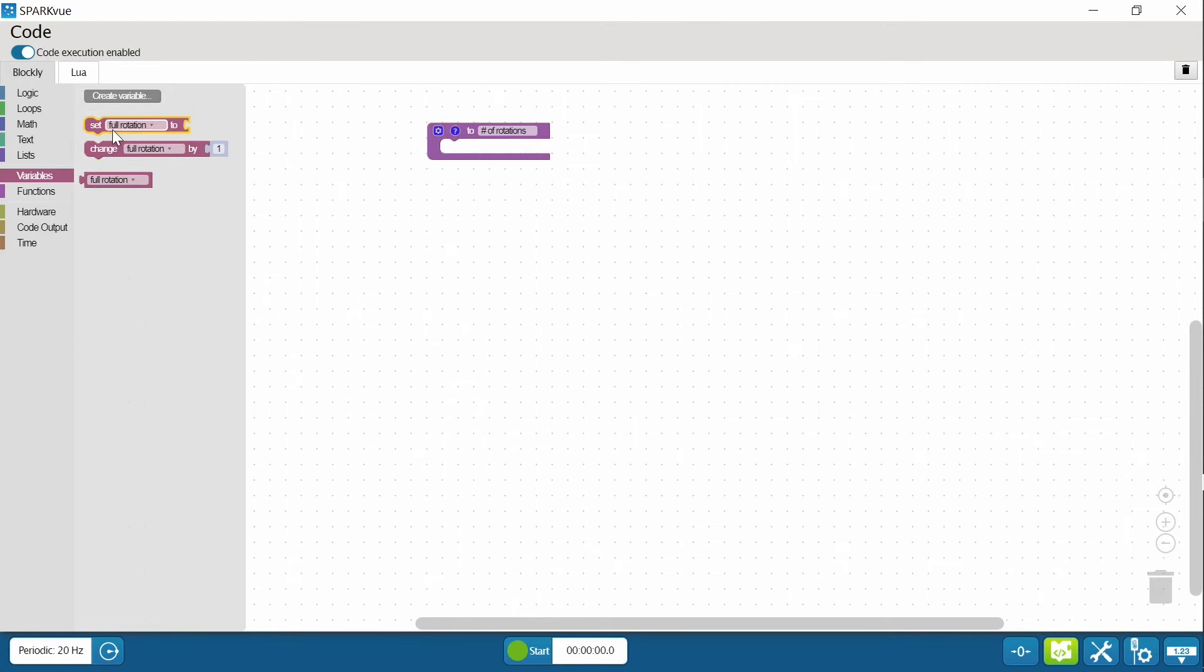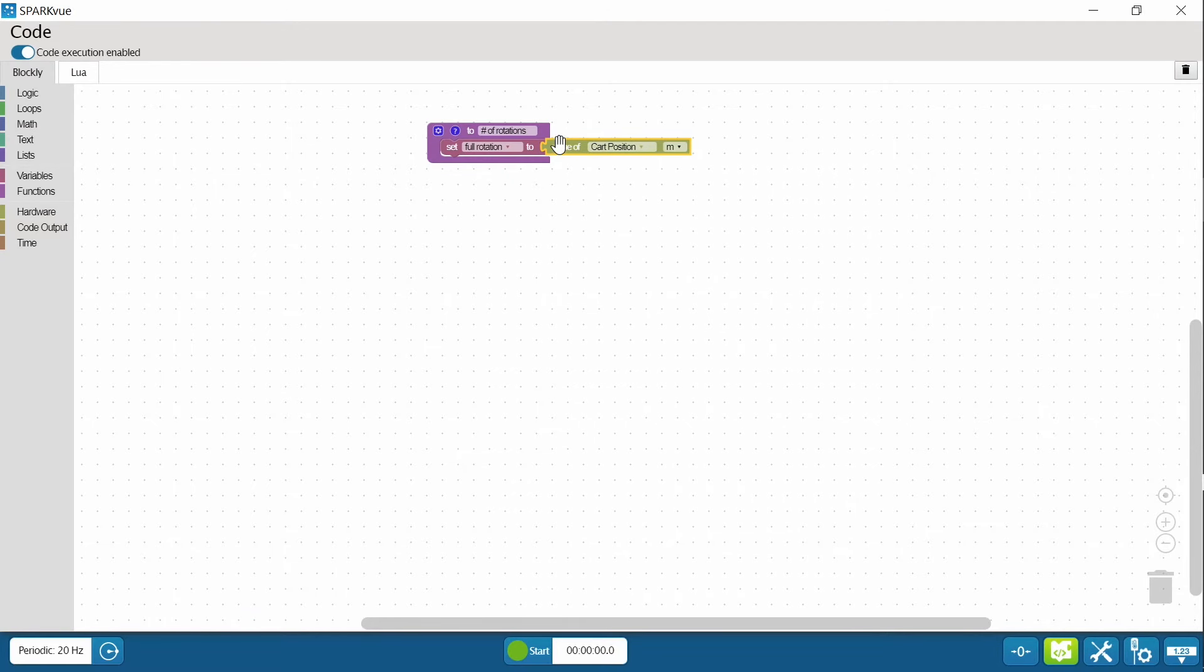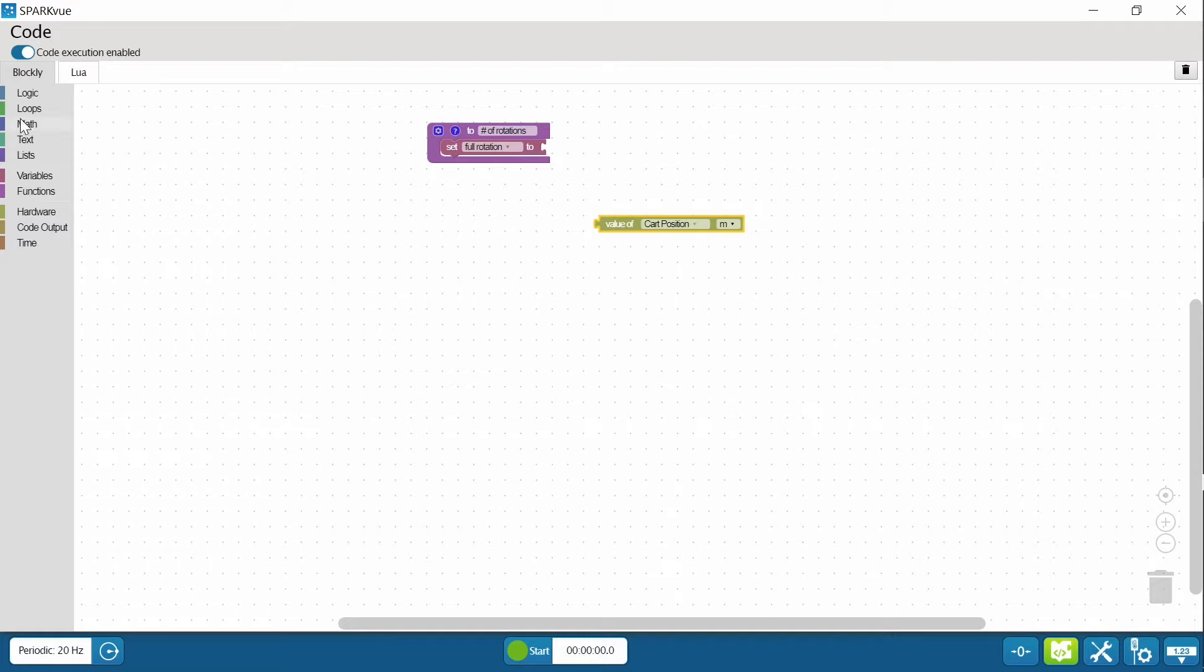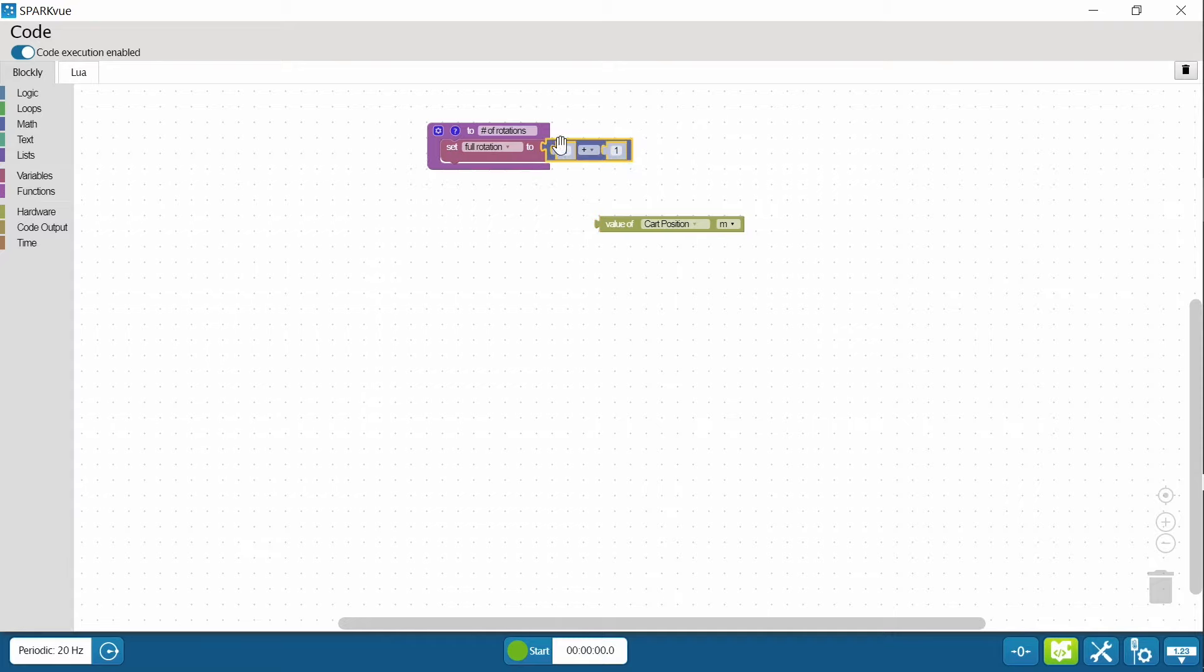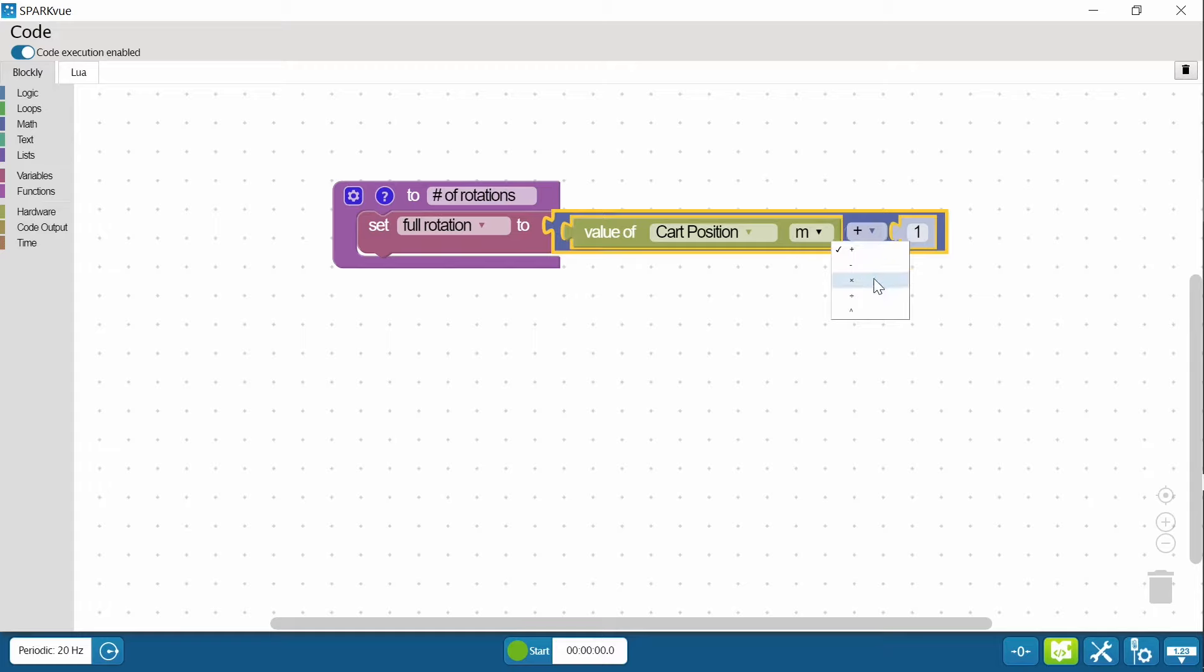So within this function, I want to set a full rotation to the cart position, which in this case is going to be distance traveled. And I need to put this actually in a math bracket. So let's pull that out. I'm going to make this a little bit bigger so you can see my cart position divided by, and for now I'm going to put zero because what's going to go in that spot is the circumference of the cartwheel tire that you calculated yourself. I'm not going to give you that. So there's my function.